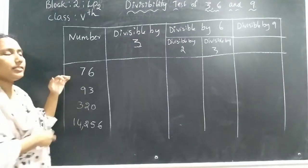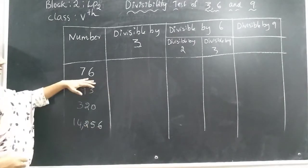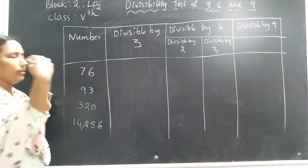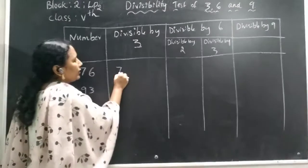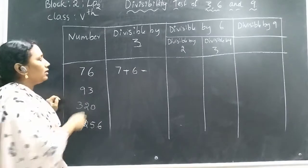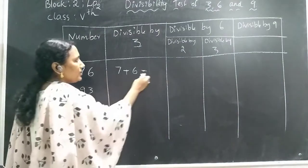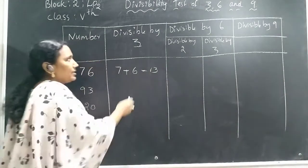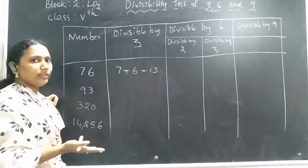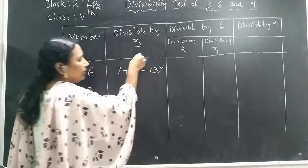Now let's check whether these numbers are divisible by 3, 6, and 9. Take the number 76. For divisibility by 3, the sum of the digits must be in the table of 3. So: 7 plus 6 equals 13. Is 13 in the 3 times table? No — 3 times 4 is 12 and 3 times 5 is 15. So 76 is not divisible by 3.